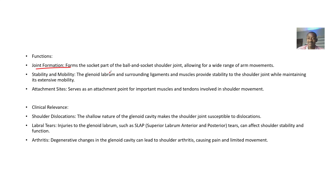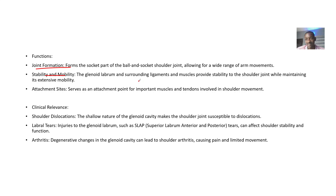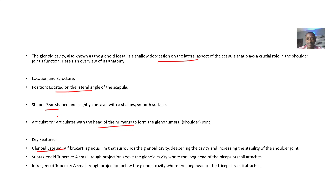For the functions of the glenoid cavity: joint formation — it forms the socket part of the ball-and-socket joint that the shoulder joint is, allowing for a wide range of arm movements. For stability and mobility, the glenoid labrum and the surrounding ligaments and muscles provide stability to the shoulder while maintaining its extensive mobility. It is also an attachment site for important muscles.